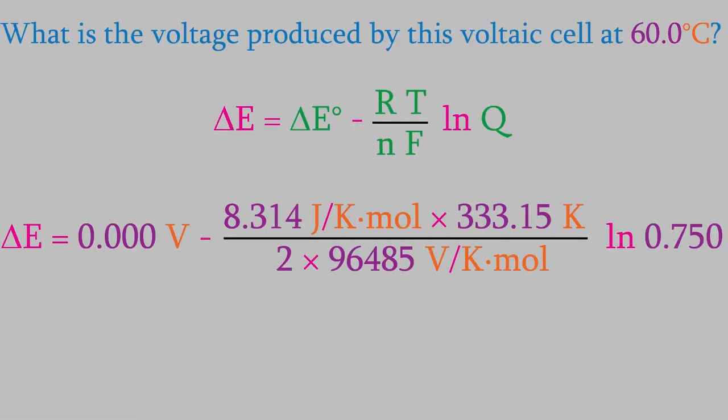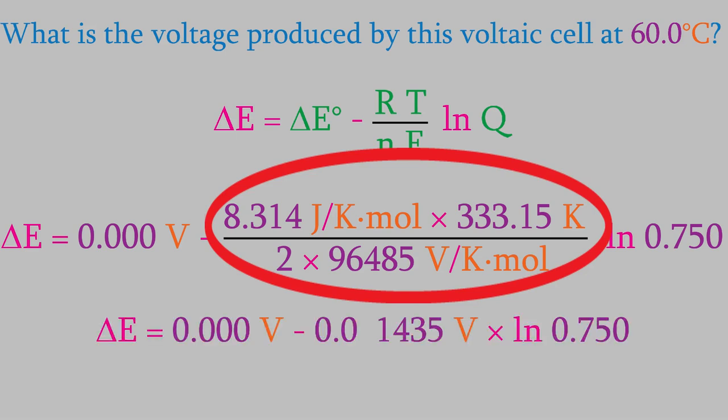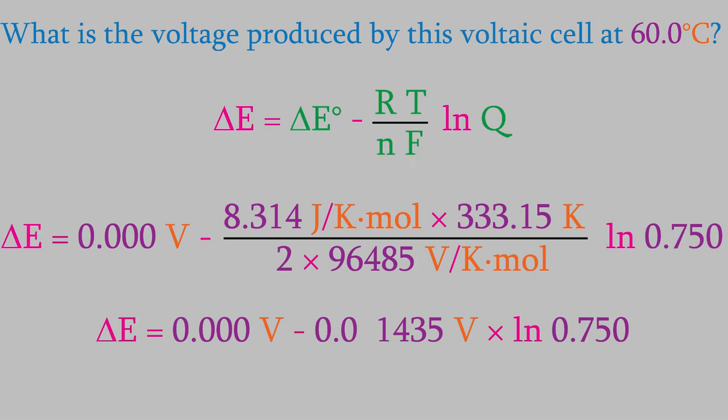Now we can solve the Nernst equation. The large fraction in the center is equal to 0.01435 volts. That will allow us to get our final answer, which is 0.00413 volts for the overall voltage.